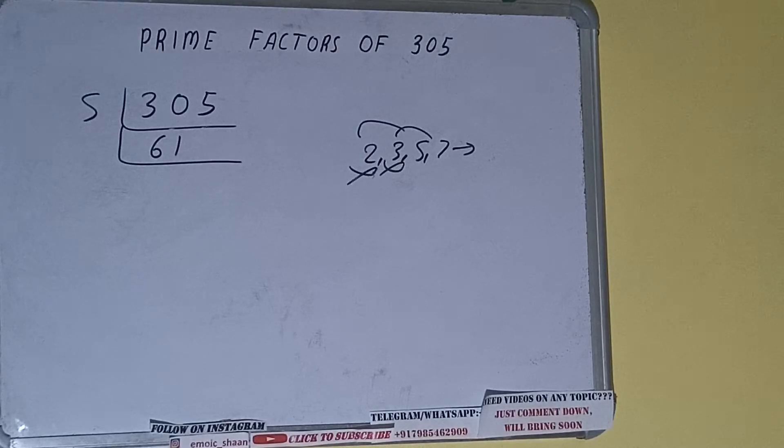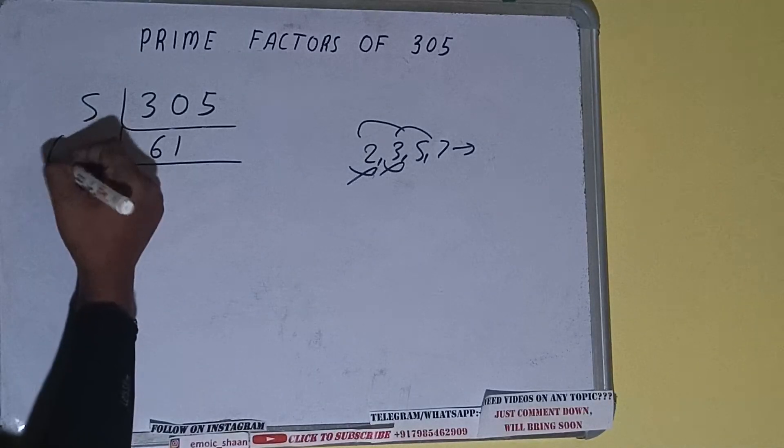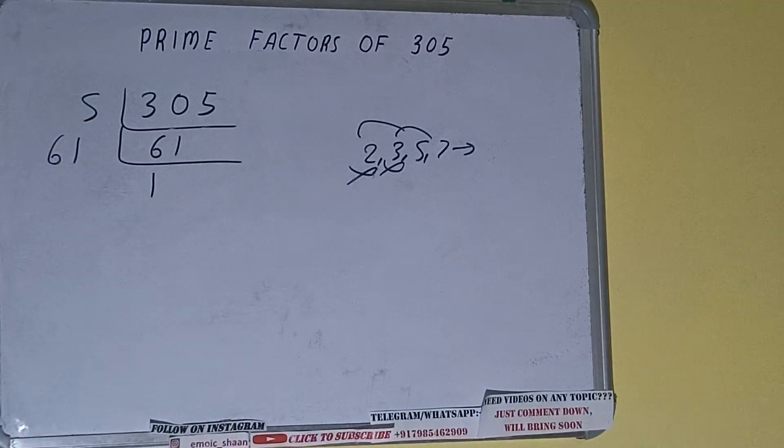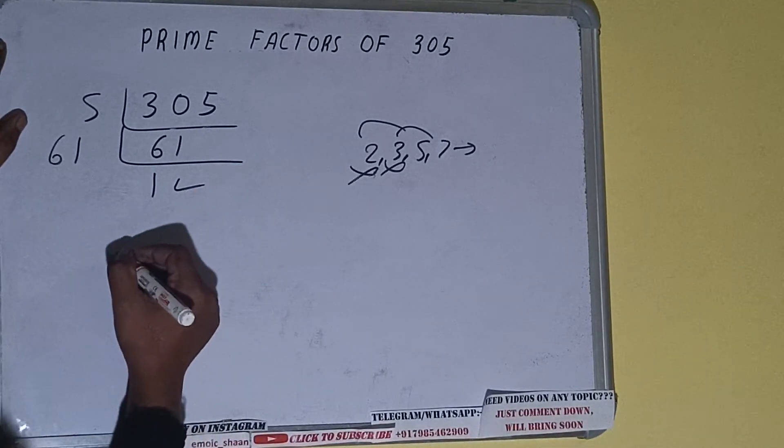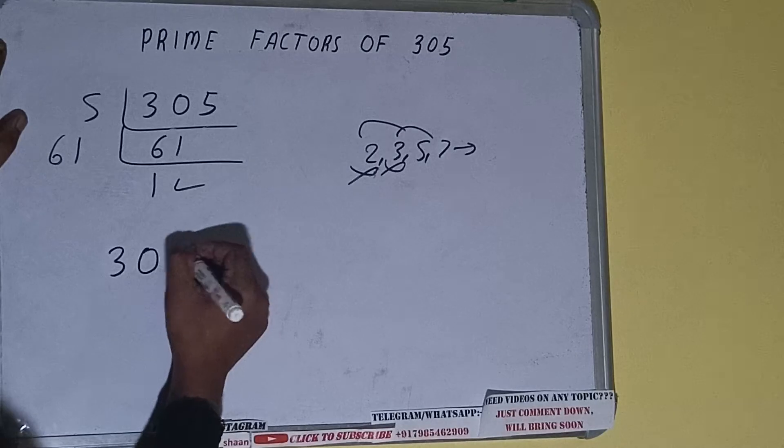So it is only divisible by itself, that is 61. And once we do so, we'll be getting 1. Once we get 1, we need to stop and do one last thing.